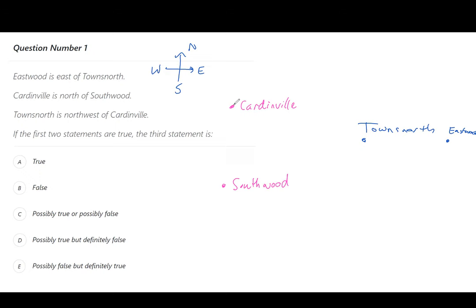Because those are two separate sets of towns, it actually hasn't told us anything about the third set, which is towns north is northwest of Cardenville. We have no idea. So it definitely could be true because we have no connection between these words.